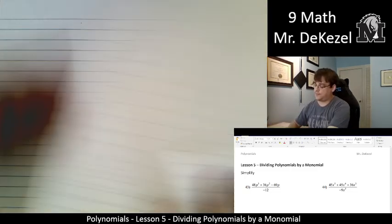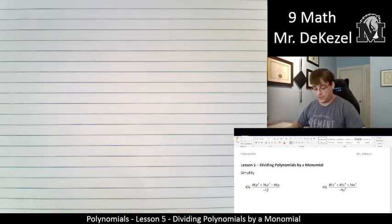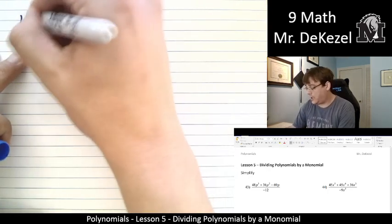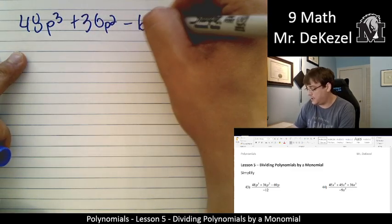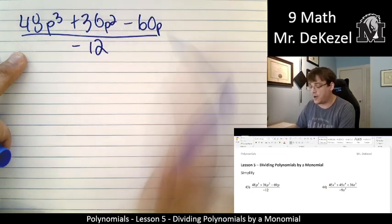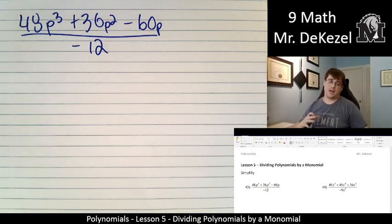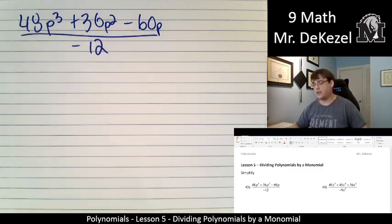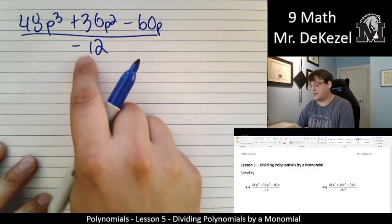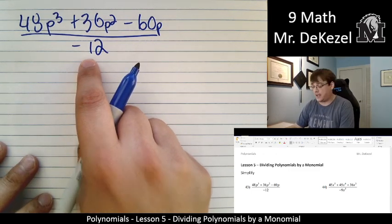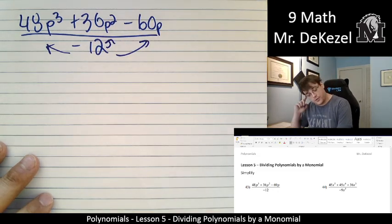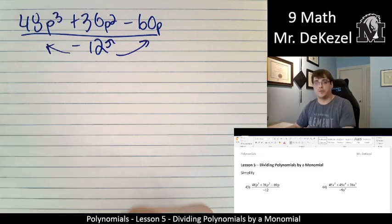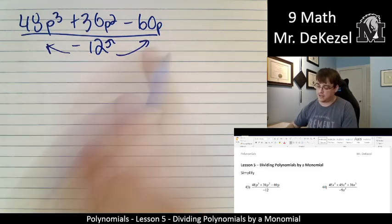Let's go to the very first one. We have 48p³ + 36p² - 60p, all divided by -12. And when we have a polynomial like this, this is a trinomial, divided by a monomial, we are just going to take this monomial on the bottom and divide it individually to this one, to this one, and to this one. It is very similar to the distributive property where we are multiplying. We're just going to apply this -12 to all of these.